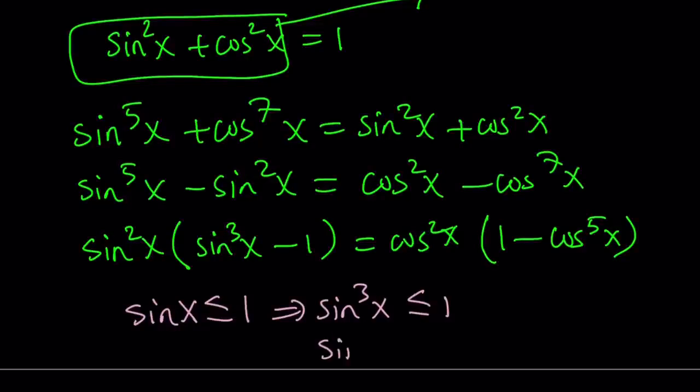Sine cubed x is also less than or equal to one. But when you subtract one from both sides, you notice that this expression is non-positive. Or should I say less than or equal to zero? Okay, great. So this is less than or equal to zero. We know that.